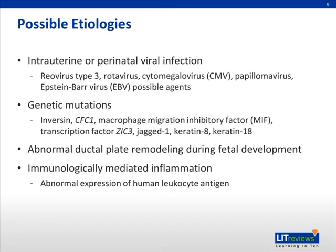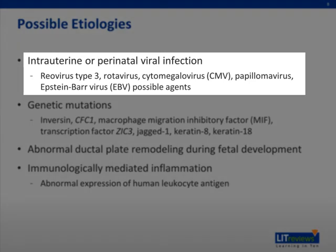Several possible etiologies of biliary atresia have been described. One possible etiology is intrauterine or perinatal viral infection. Several viruses have been identified as possible agents, including reovirus type 3, rotavirus, cytomegalovirus, papillomavirus, and Epstein-Barr virus.